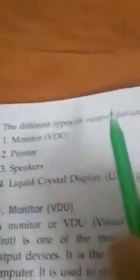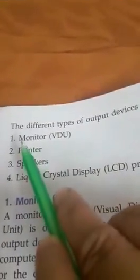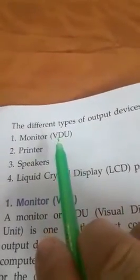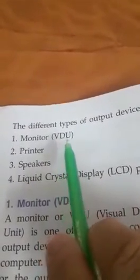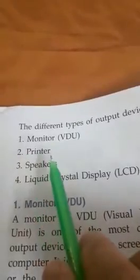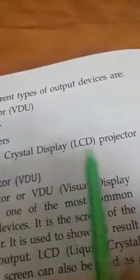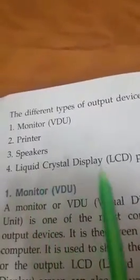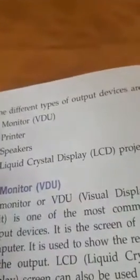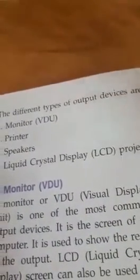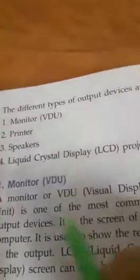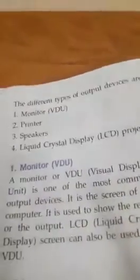The different types of output devices are: Number 1 — Monitor, which is VDU (Visual Display Unit). Number 2 — Printer. Number 3 — Speaker. Number 4 — Liquid Crystal Display Projector, that means LCD Projector. LCD stands for Liquid Crystal Display.